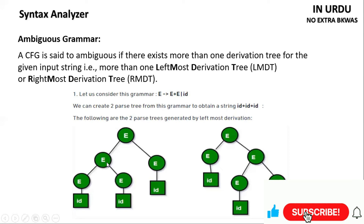Here, E — this is where we have the leftmost derivation. We have converted and expanded it. But we have also derived it using the rightmost derivation, so this shows ambiguity. We can create two parse trees from this grammar and obtain ID plus ID plus ID.